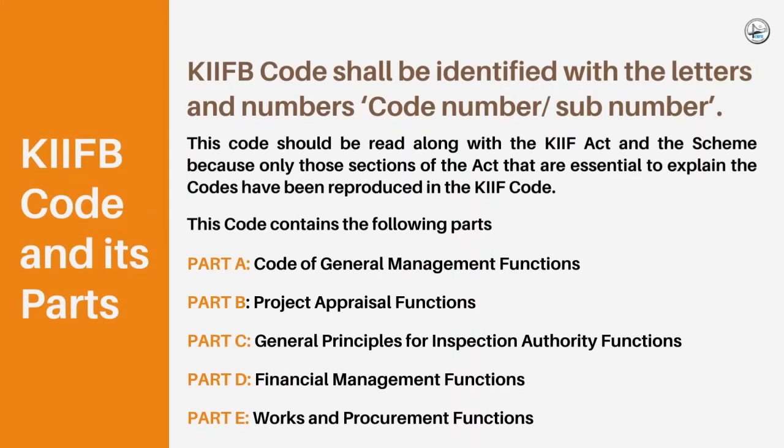KIF-B code shall be identified with letters and numbers. This code should be read along with the KIF Act and the Scheme. The code contains the following parts: Part A - Code of General Management Functions. Part B - Project Appraisal Functions. Part C - General Principles for Inspection Authority Functions. Part D - Financial Management Functions. And Part E - Works and Procurement Functions.